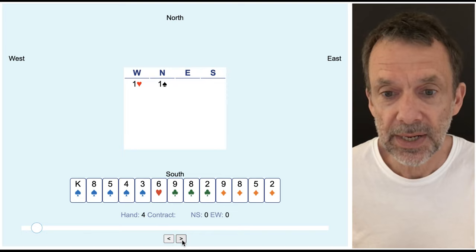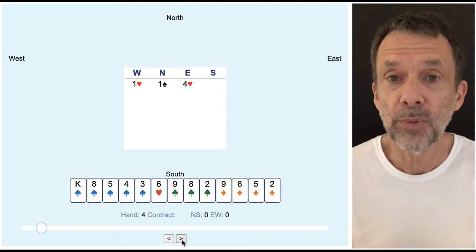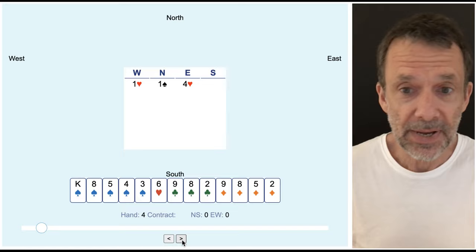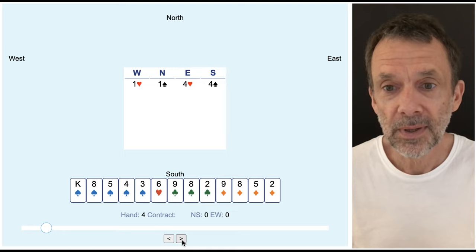West bids one heart. North bids one spade. And east bids four hearts. This is hand four. So everybody is vulnerable. Now I'm going to bid four spades, which you may think is a little bit crazy, or you might think it's a good idea, but I'm going to do it anyway.